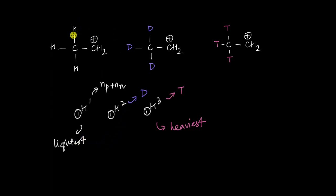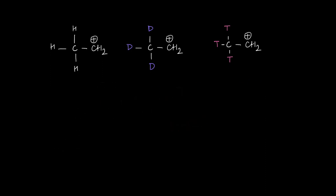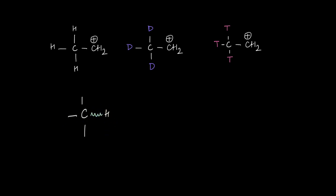It turns out that these small differences in mass of these isotopes also affect their ability to show hyperconjugation to a surrounding cation or an alkene. To understand, let's take a carbon-hydrogen bond. We generally represent a bond by a straight line, but in reality the atoms in any molecule are not static — they keep vibrating. So a chemical bond is more like a spring.